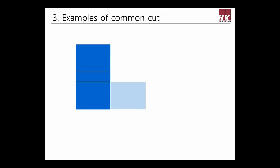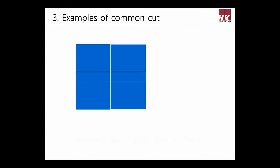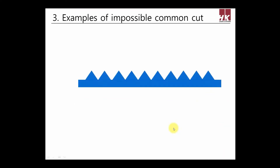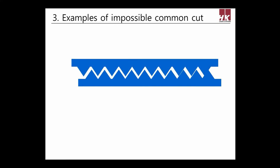It is recommended to nest parts facing the same side as each other — attaching several parts or attaching several parts in a row. However, common cut is not allowed for sawtooth shapes such as grids or curves.